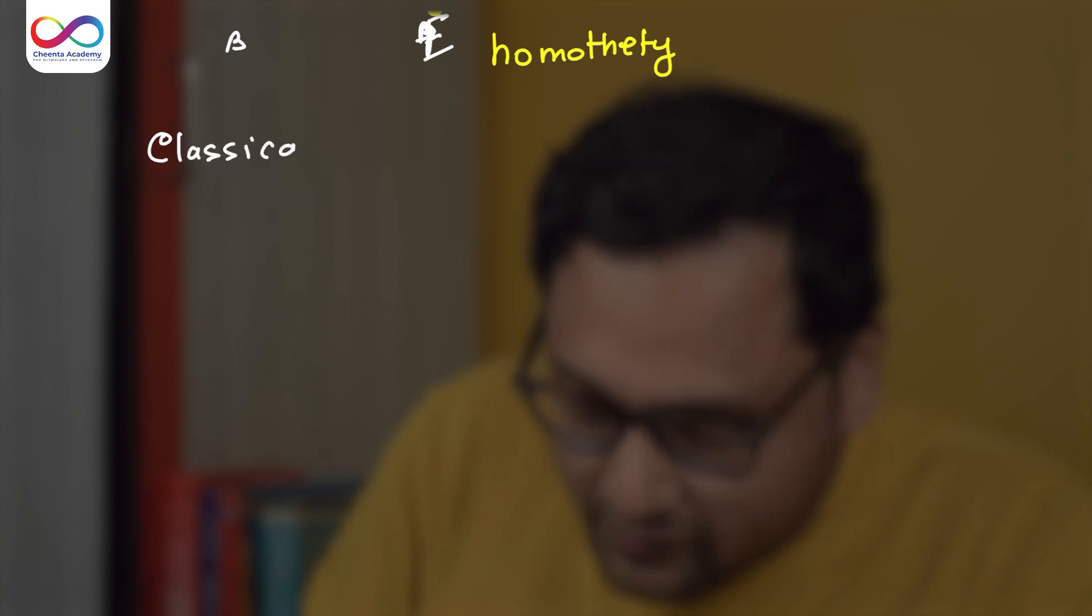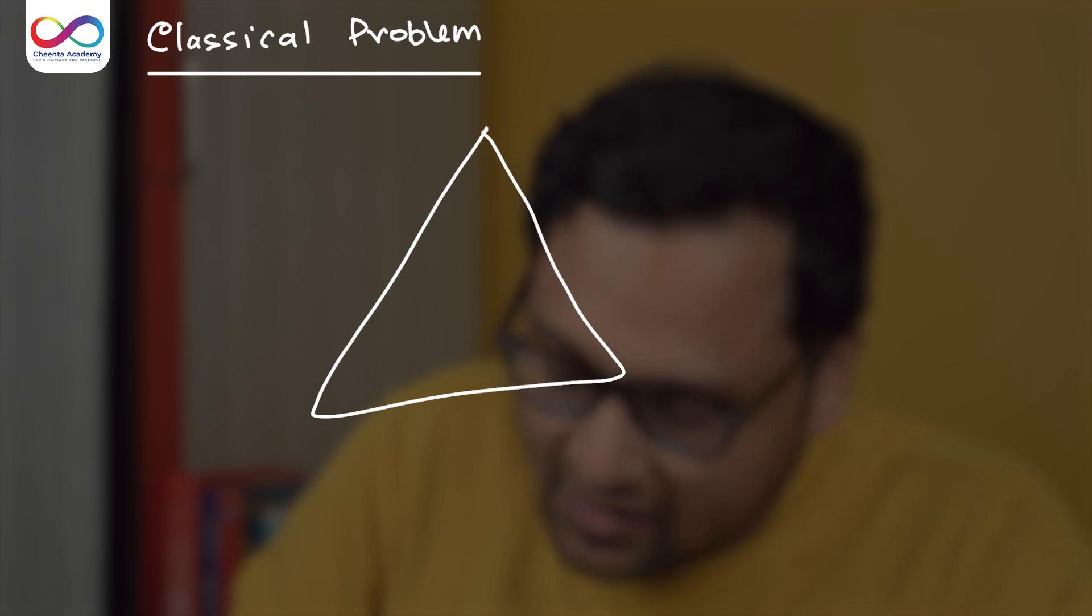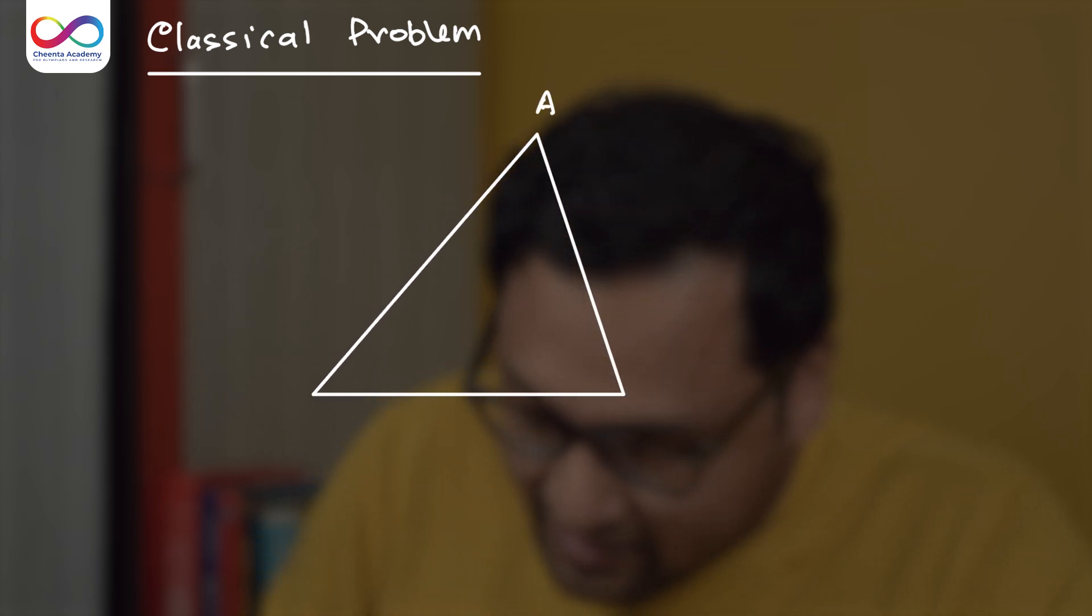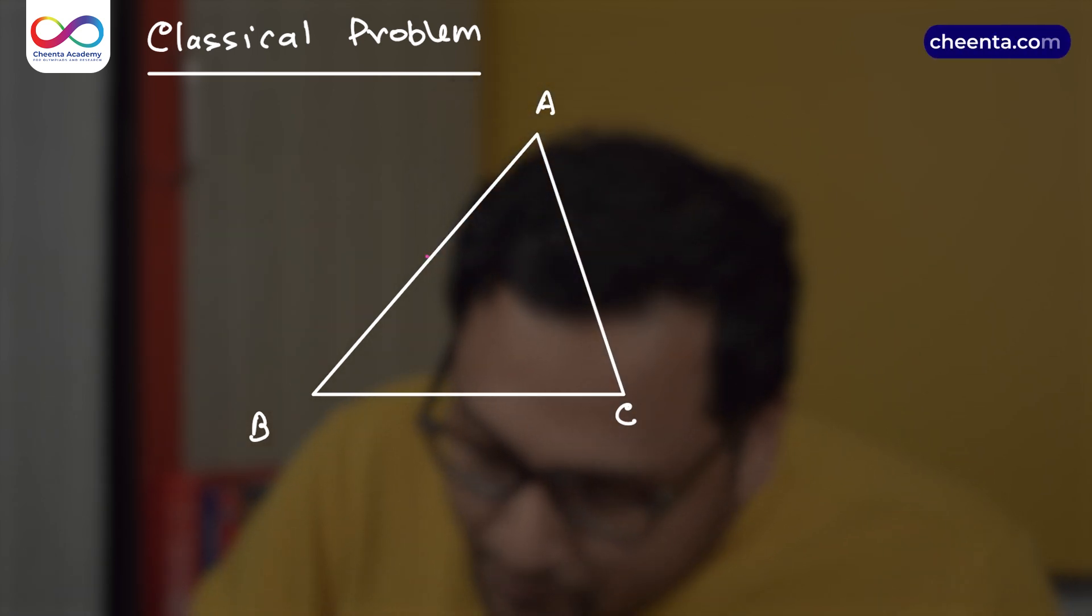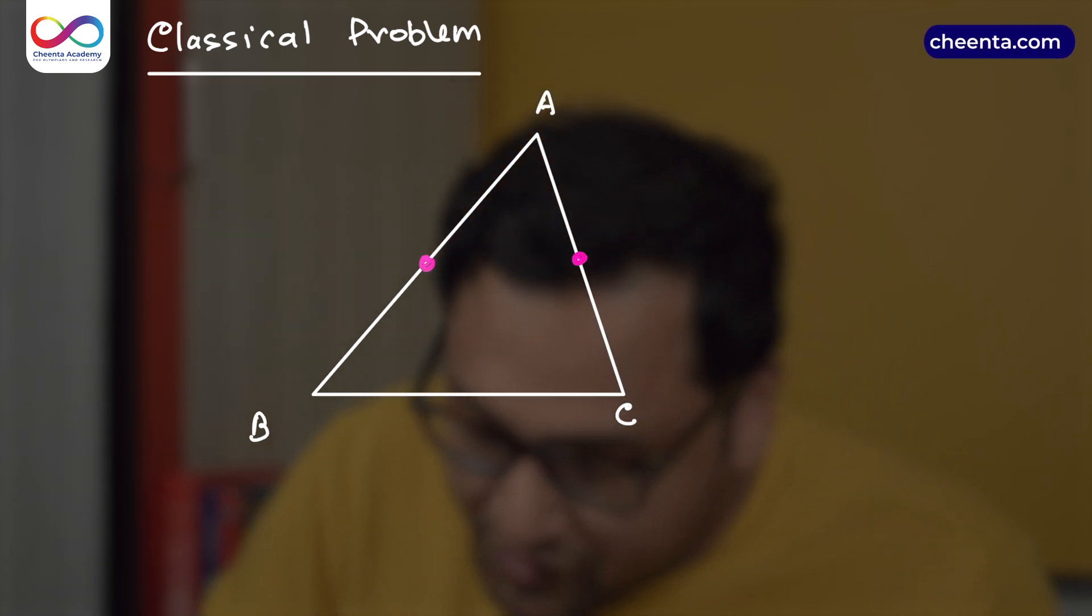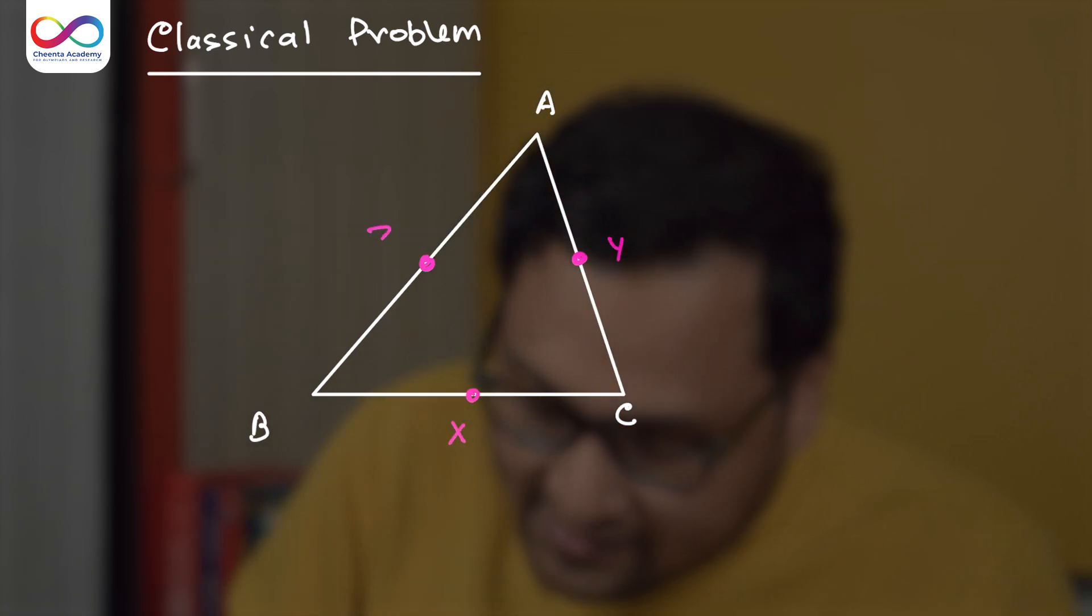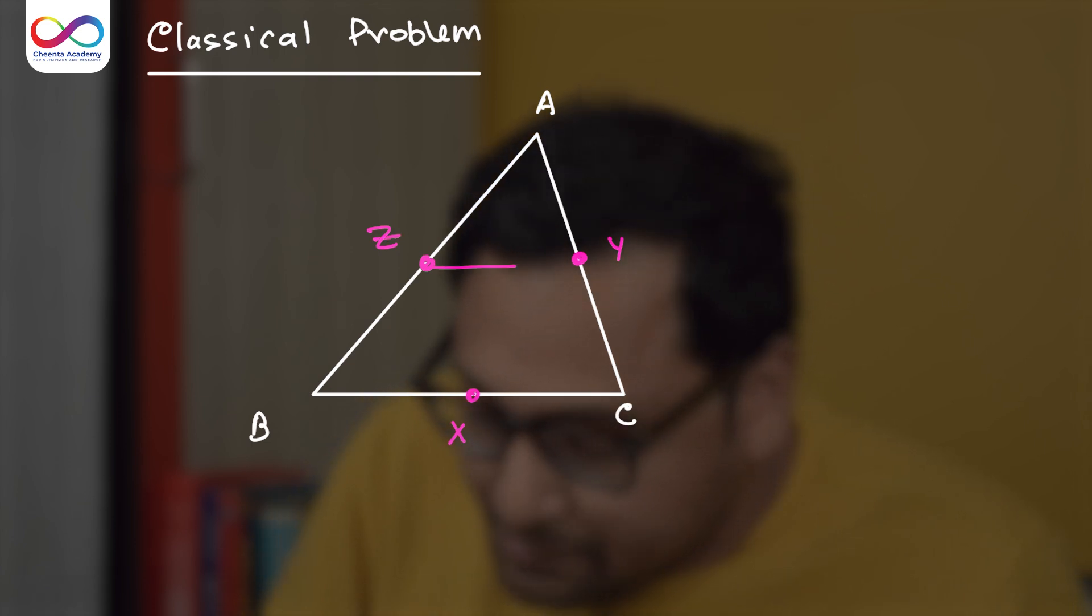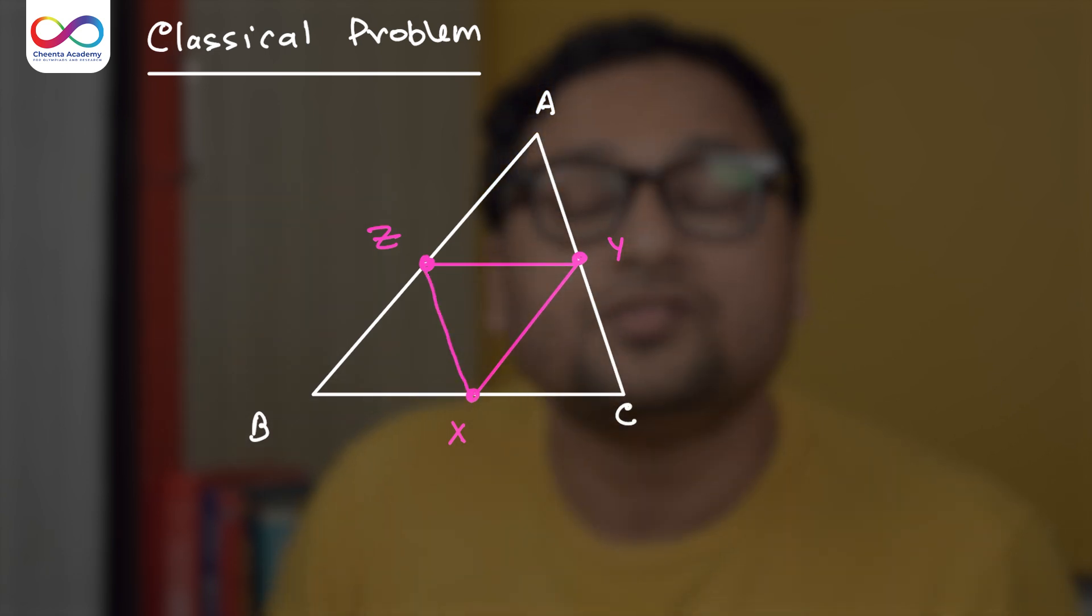How do we go about doing it? We want to work on a classical problem. It's a very beautiful problem. Most of you will know it or may have heard about it. The problem is this. Suppose you have a triangle ABC. And you mark the midpoints of the three sides of the triangle. Maybe this is X, this is Y, this is Z. This particular triangle is sometimes known as the medial triangle.